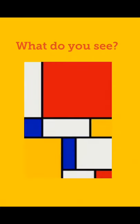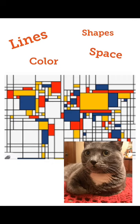What do you see? I see lines, color, shapes, and space. The shapes are rectangles and squares.